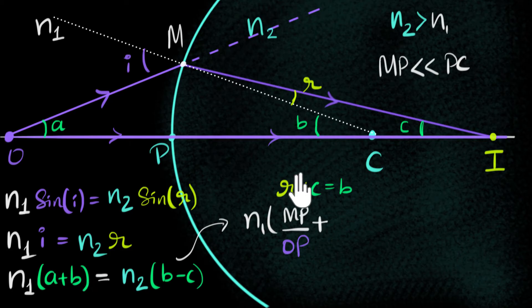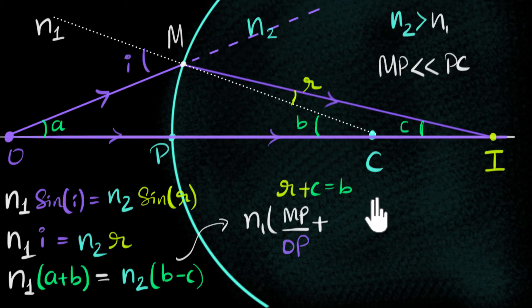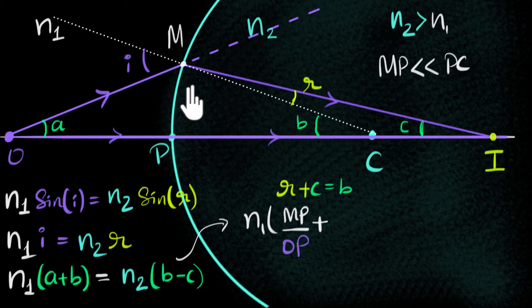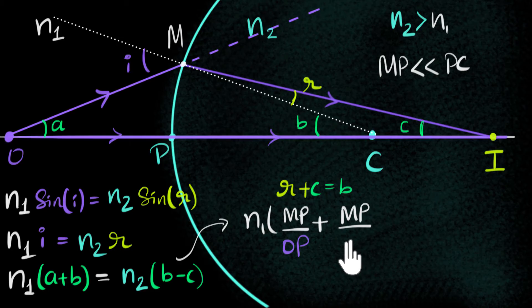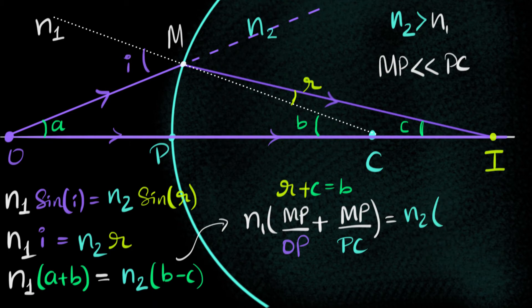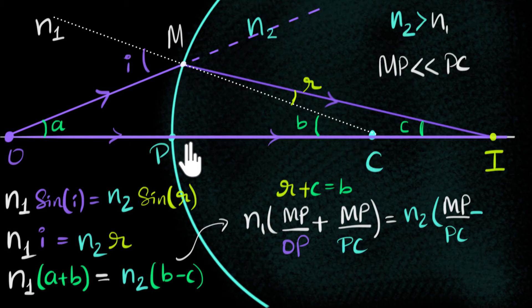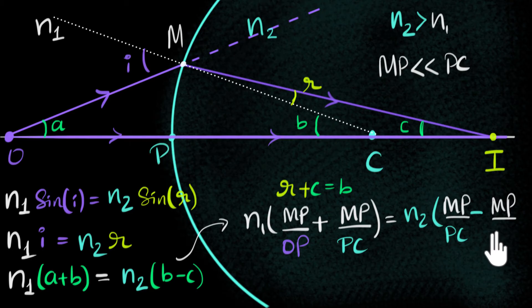To find angle b, look at the corresponding triangle and apply the same small angle approximation: b ≈ tan(b) = MP / PC, where PC is the radius of curvature. And for angle c, again using small angle approximation: c ≈ tan(c) = MP / PI, where PI is the image distance. So the equation becomes: n1 × (MP/OP + MP/PC) = n2 × (MP/PC − MP/PI).